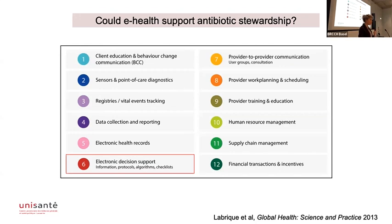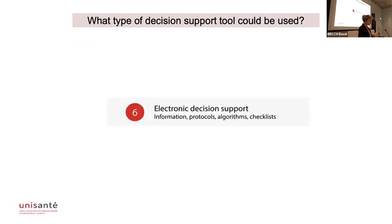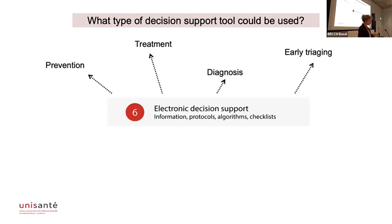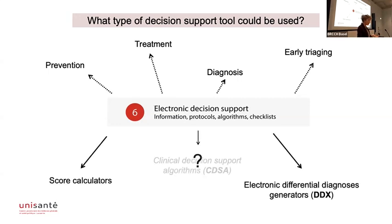This is part of area six of the different tools classified by WHO. This electronic decision support tool can address problems from prevention to diagnosis — first early triaging of the child, then diagnosis and treatment. We tried to address mainly the three last areas, but also a bit of prevention. Traditionally there were two types of tools: score calculators used in medicine for many years, and electronic differential diagnosis generators that give a long list of diagnoses. Neither is really appropriate for primary care health workers, so we needed something else — what we called at the end CDSA.